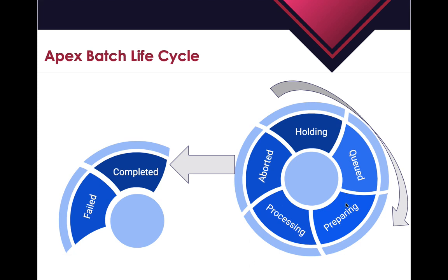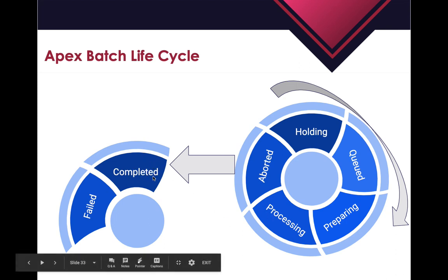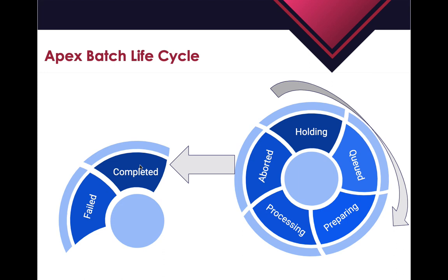In the Queued state, the batch is waiting for execution. In the Preparing state, the start method is executing. Once it completes, it goes to Processing, meaning the execute method is being executed - how many times depends on the number of records and chunk size. If the user aborts the batch, it goes to the Aborted stage. From Processing it goes to Completed, which may include some failed batches. The Failed state occurs either when the flex queue is full or when the query returns more than 50 million records.